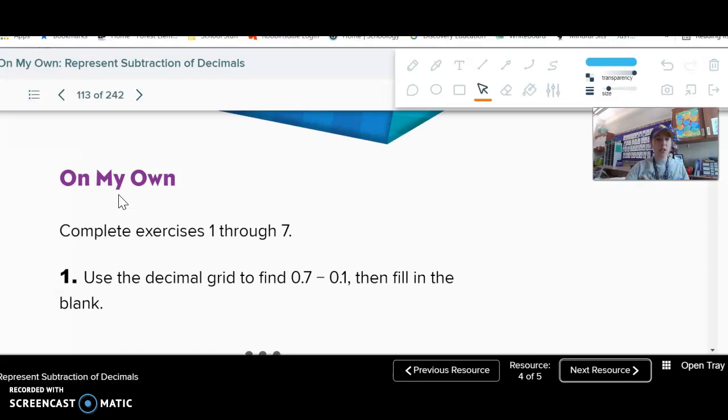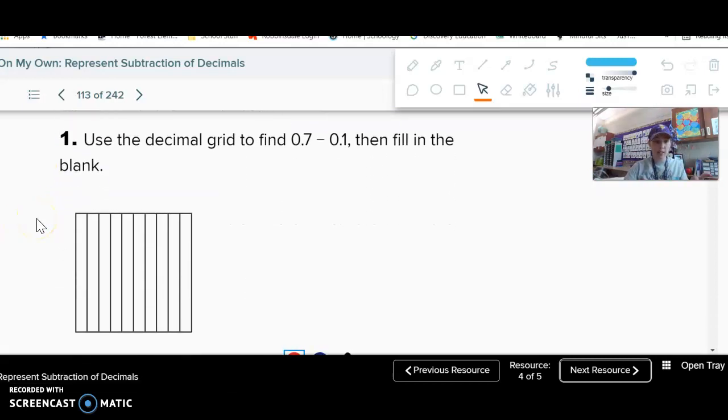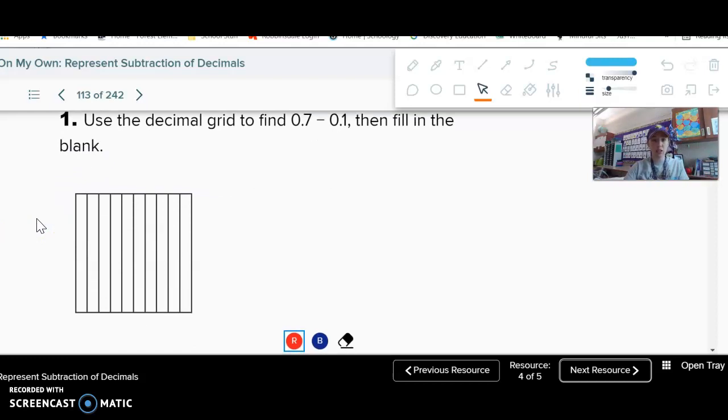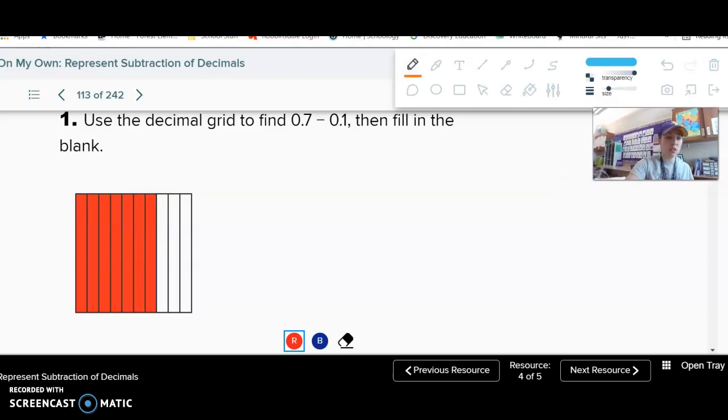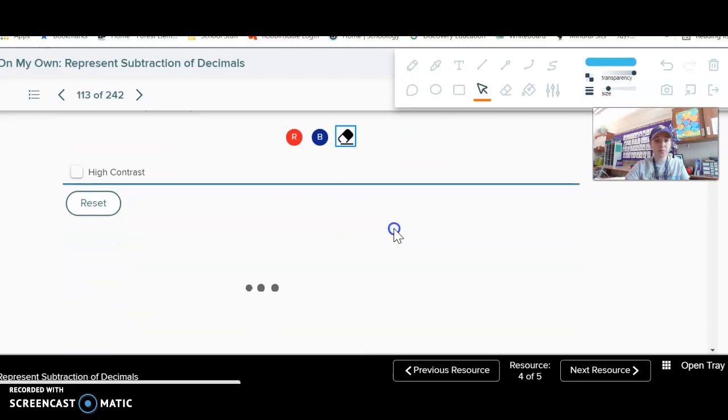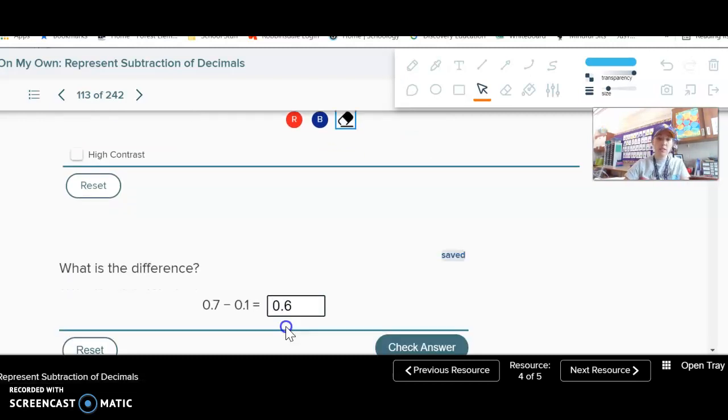You have the grids and the number line on your paper, so you can actually draw it out and visualize. 0.7 minus 0.1 - go ahead, shade it in and figure it out. All right, hopefully you got it. One, two, three, four, five, six, seven tenths. Now I could either cross it out like that and say I'm ignoring that one, or I do have the ability to erase on my technology, so I could just erase the one tenth. Then I say, what do I have left? Well, I have six tenths left. So then I know that my answer is going to be six tenths.